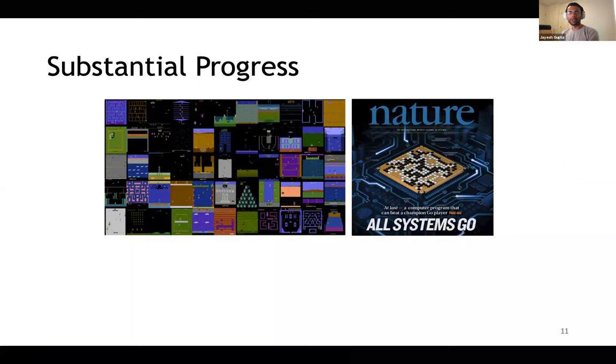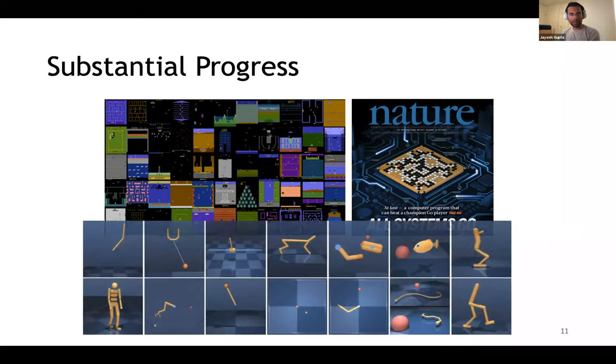The last few years, the field of decision-making has seen tremendous progress. Deep neural network-based function approximation and immense compute has allowed scaling to high-dimensional picture observations, for example, as well as large continuous action problems.